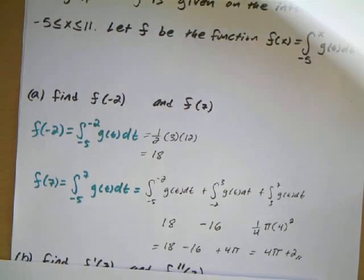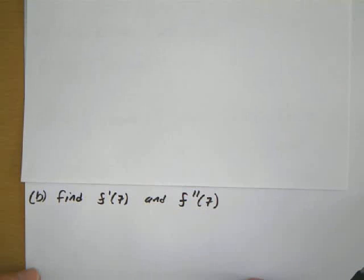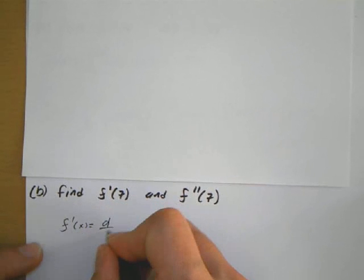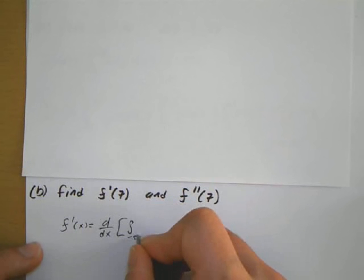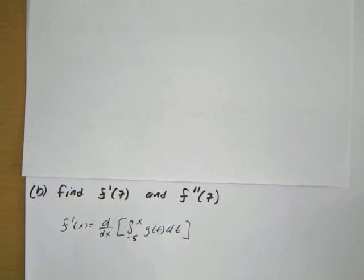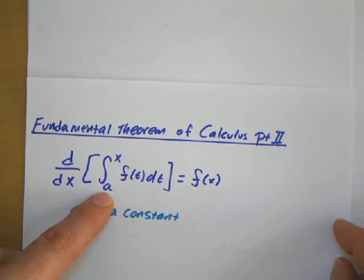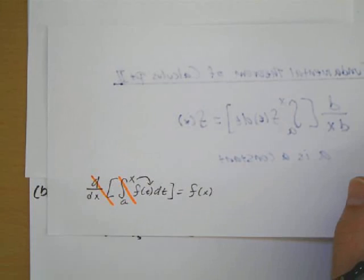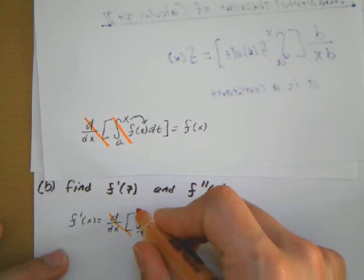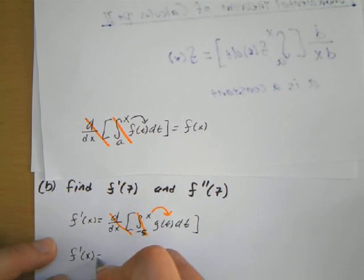Moving on to part B. Now I want to find f prime at 7 and f double prime at 7. Well, f prime of x is going to be the derivative with respect to x of this integral function from negative 5 to x, g of t, dt. Based on the second fundamental theorem of calculus, if I take a derivative of an integral, it cancels out. So f prime of x is the same thing as g of x.